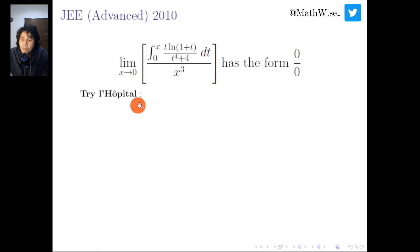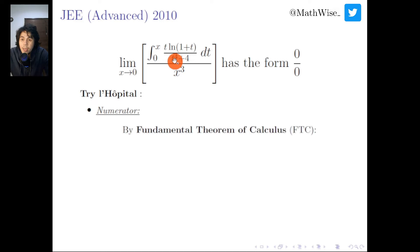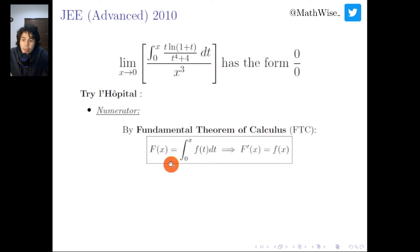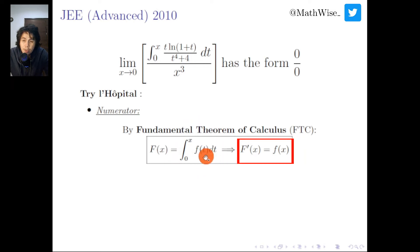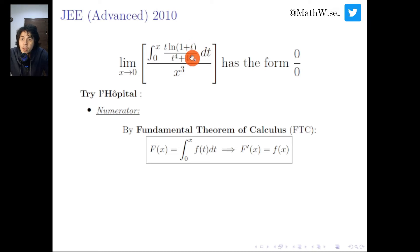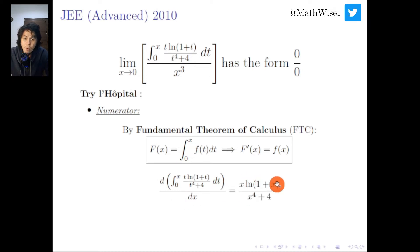Let us try to use L'Hôpital. We need the first derivative of the numerator, which is an integral. We can do that using the Fundamental Theorem of Calculus: the derivative of the integral from 0 to x of f(t) dt equals f(x). So the derivative of the numerator is x times ln(1+x) over x to the power of 4 plus 4.